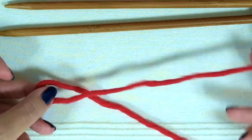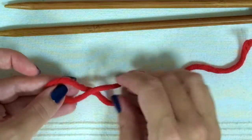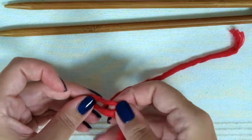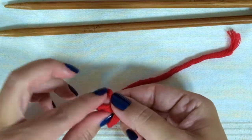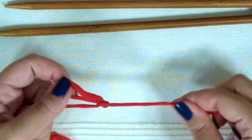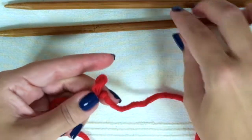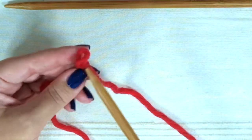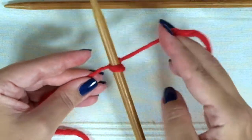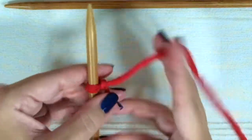First, we're going to make a slipknot. Now grab your needle and slide it through the loop. This loop is called a stitch.